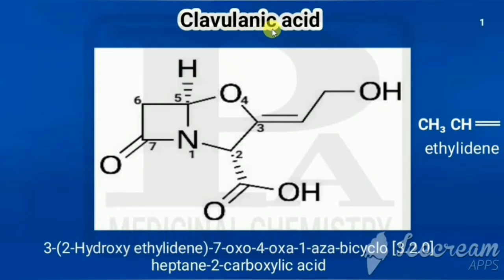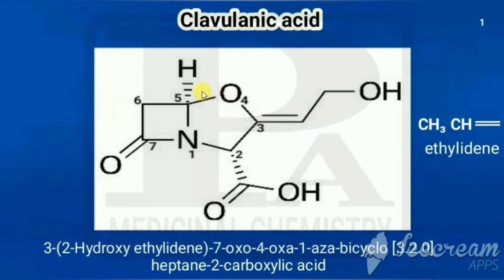In this class, we are going to see the nomenclature of beta-lactamase inhibitors. The first example is clavulanic acid. We have seen two types of nomenclature systems: the CA system (Chemical Abstract System) and the USB system. In the CA system, numbering starts from oxygen, as oxygen has higher priority in the heteroatom priority order: O > S > N. In the USB system, numbering starts from nitrogen.